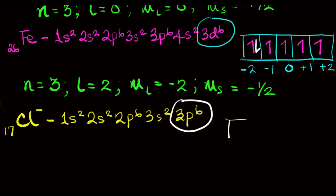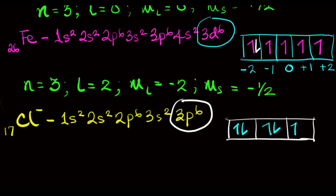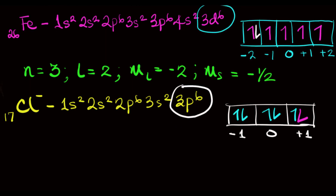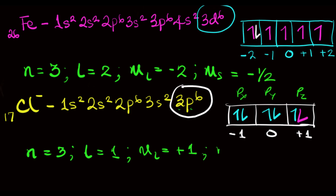Since there are 6 electrons, we are going to fill them accordingly: 1, 2, 3, 4, 5, 6. The magnetic quantum numbers of these orbitals are minus 1, 0, and plus 1. Therefore, the 4 quantum numbers of the last electron in the chloride ion will be: N equals 3 (the third shell), L equals 1 (the p subshell), M sub L equals plus 1 (the pz orbital), and M sub S equals minus half, which is the downward spin.